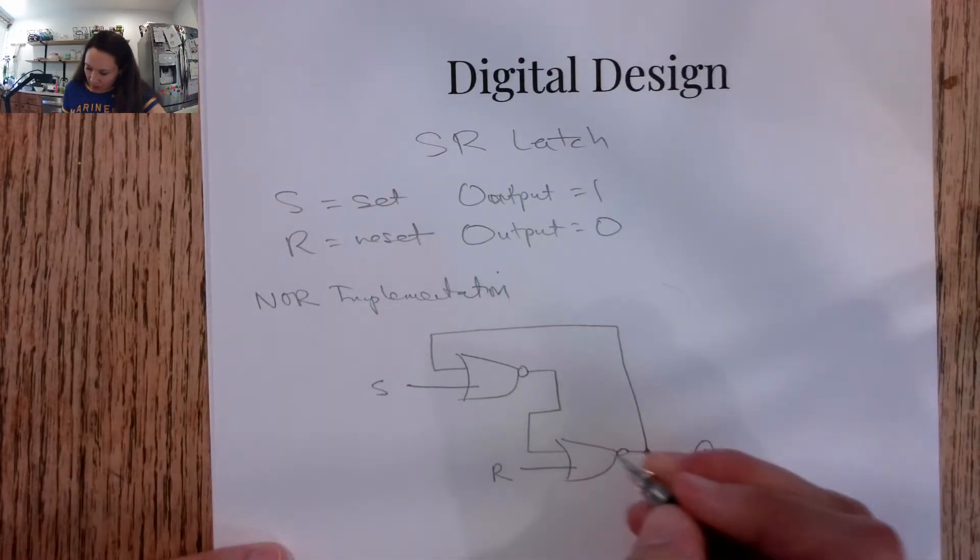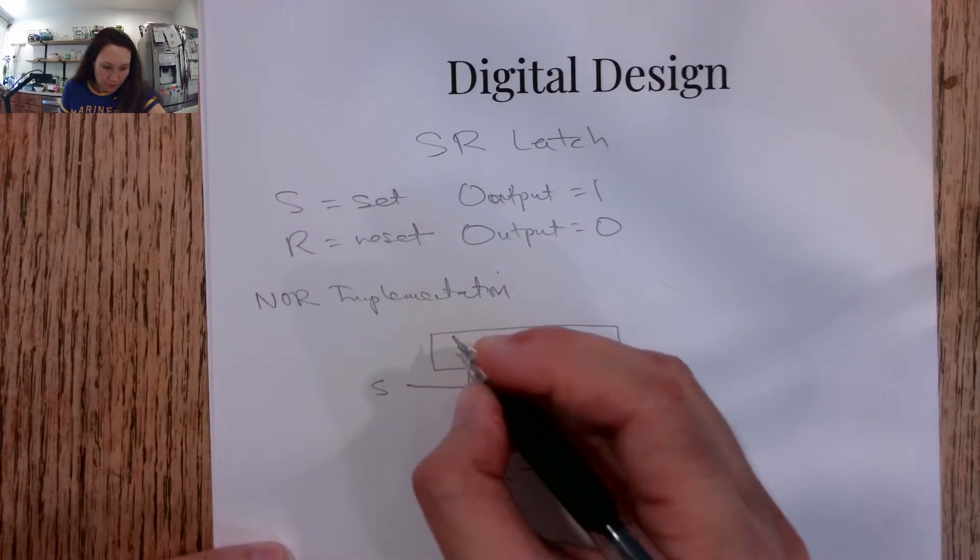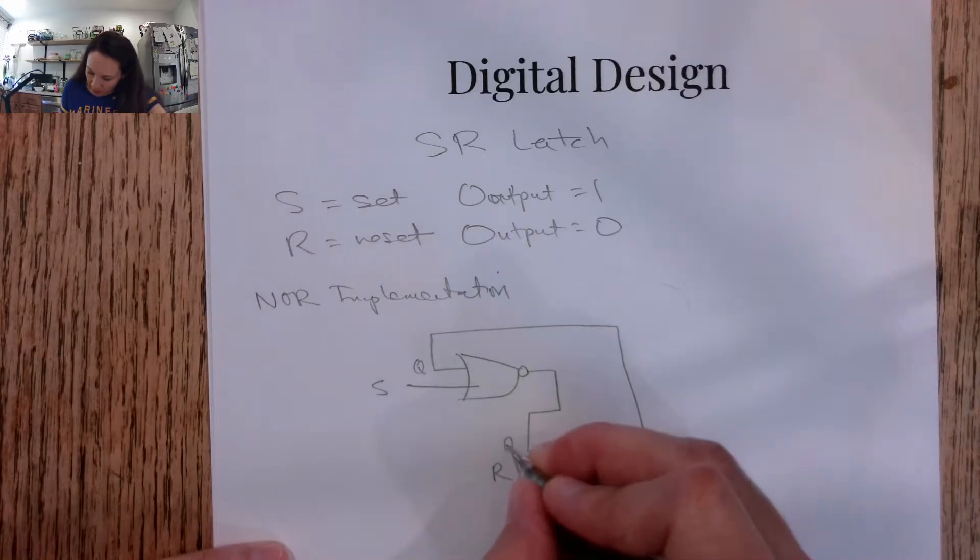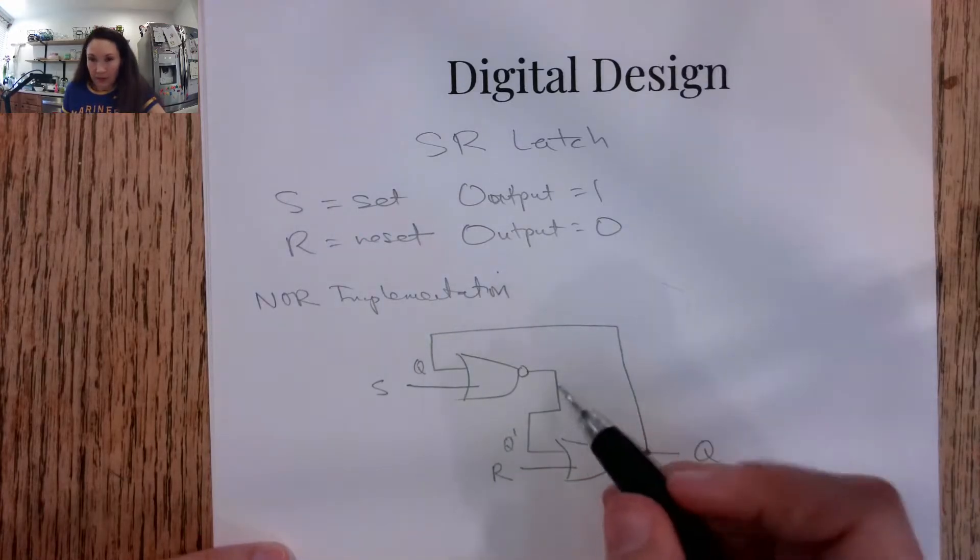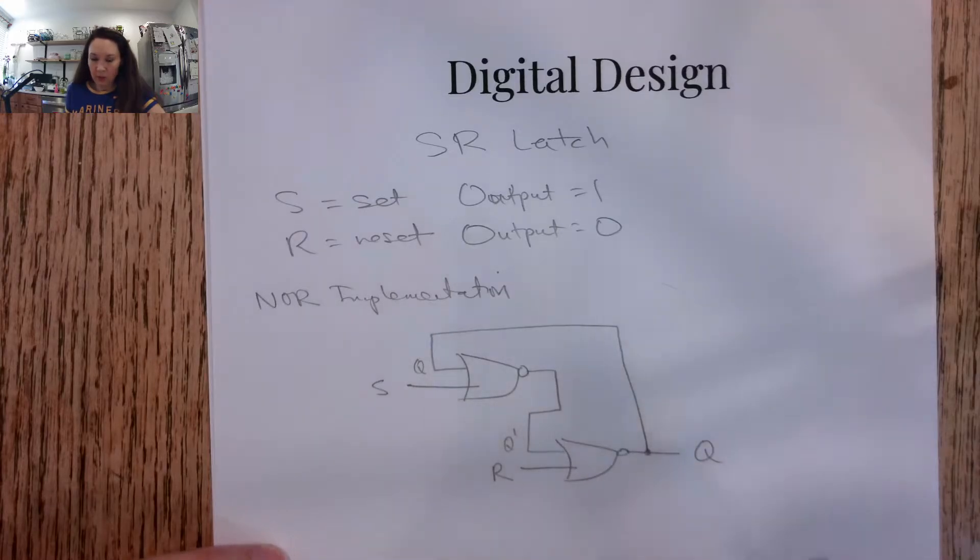So this ends up being Q, and this ends up being Q naught. It's this intermediary input that goes from the first NOR to the second NOR.